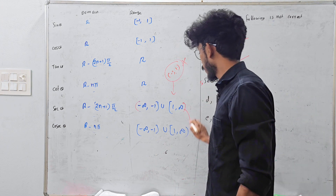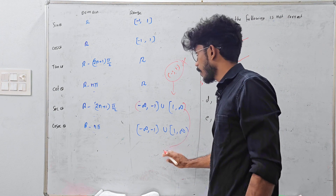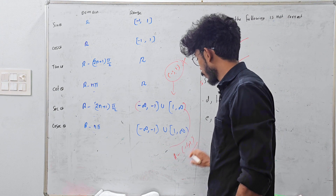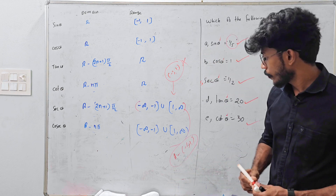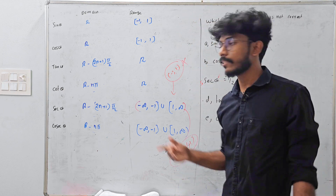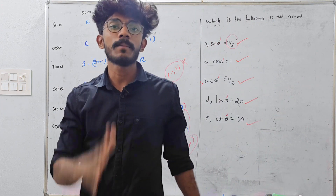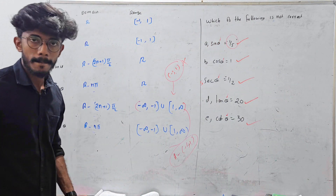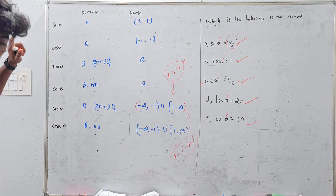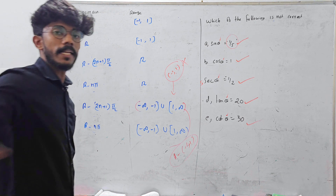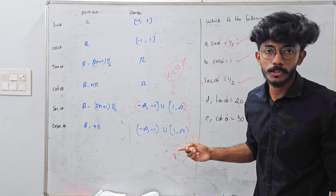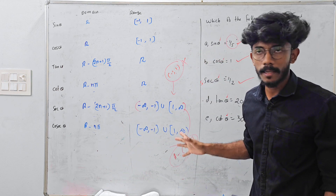If you want to see the range, the real number will give minus 1 to 1 values for sin and cos. The other values will be the other values. The range is important. Let's take a screenshot of the domain range — if you want to write this, it is very important throughout the entrance exam. Let's talk about the different questions.